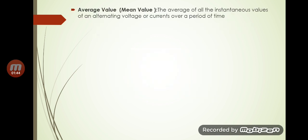Next is the average value, also known as the mean value. Average value can be defined as the average of all the instantaneous values of an alternating voltage or current over a period of time.